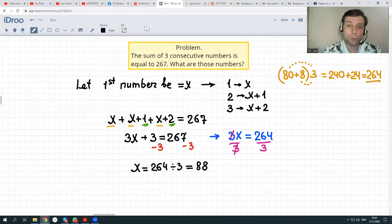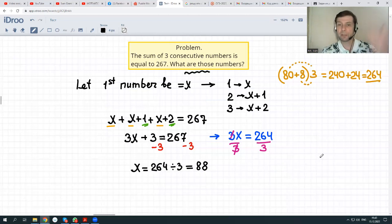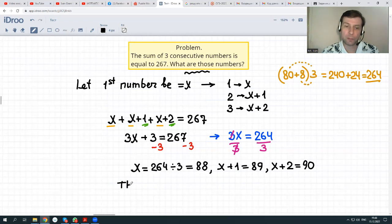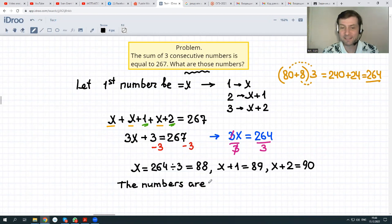Now, we know that first number is 88, but we are asked to find those numbers, means all of them. First, second, and third. We know that second number is 1 unit greater, means it's just x plus 1. x plus 1 will be equal to 88 plus 1, 89. And third number is x plus 2, which is 2 units greater than 88 and is equal to 90.